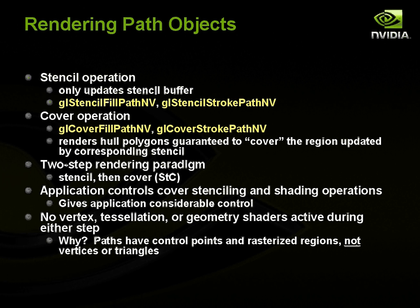It's a two-step rendering paradigm: you stencil and then you cover. You can repeat this for each path until you're done drawing your scene. The application controls the cover stenciling and the shading operations, so the application has considerable control over what happens as far as the shading. If you want to do constant color, linear gradients, apply a decal texture, or do something really fancy like a fractal or bump map shader, that's all possible — and that's something that's really hard to do with software-based path rendering APIs, but it's really easy to do in NVPath rendering.